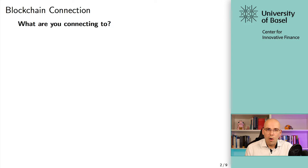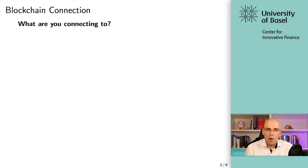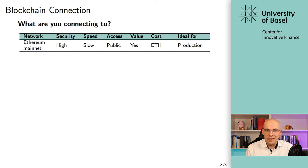Let's start with the blockchain connection, and with the question: what are you connecting to? The obvious choice when we talk about Ethereum would be Ethereum mainnet, the actual Ethereum blockchain. This has many advantages — for example, it's secure, you have public access, there is some value involved. But it also has some severe disadvantages, and I would not recommend testing your smart contracts, at least not initially, on Ethereum mainnet.